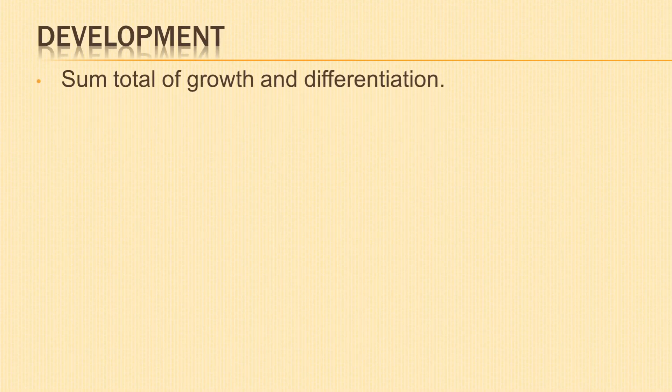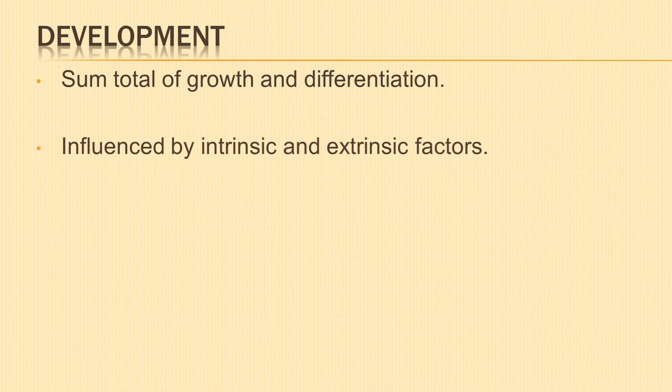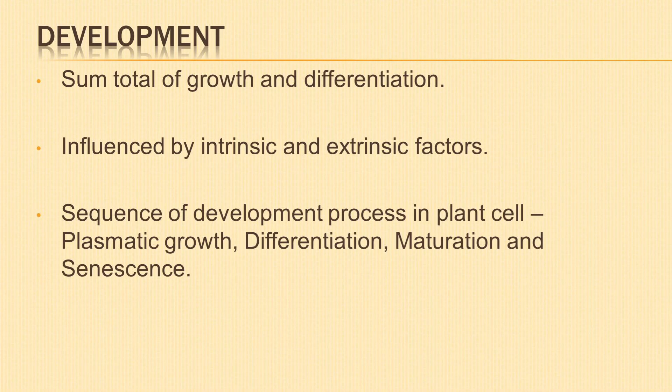We will learn about development. It is the sum total of growth and differentiation. Development is influenced by both intrinsic factors — that is, genetic and hormonal — and extrinsic factors, that is, light, water, oxygen and nutrients. The sequence of the developmental process in a plant cell is: plasmatic growth, followed by differentiation, maturation and senescence respectively.